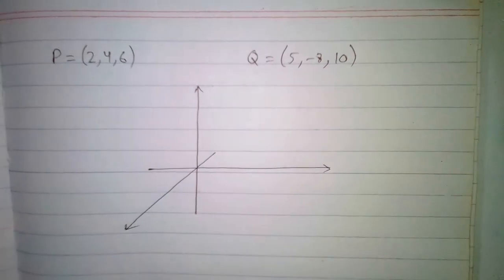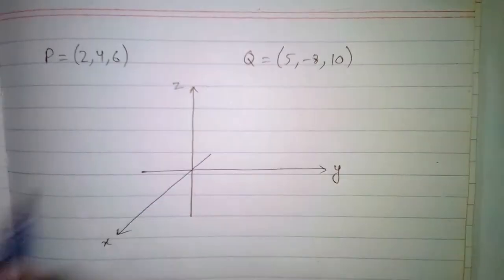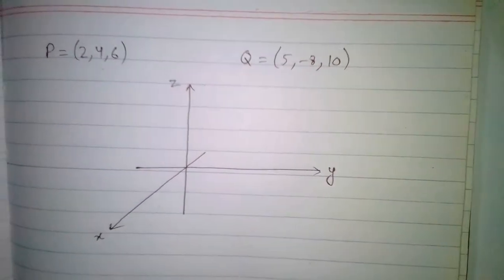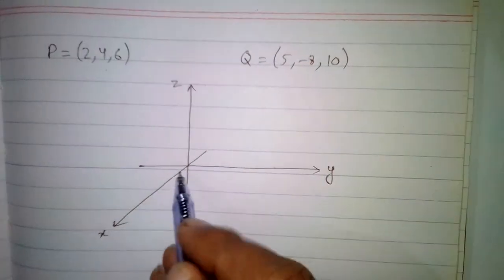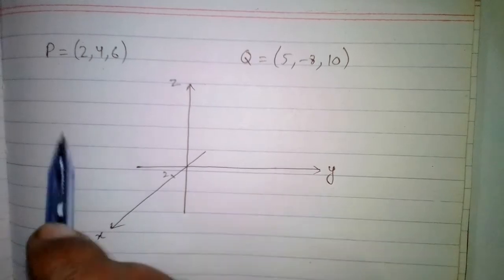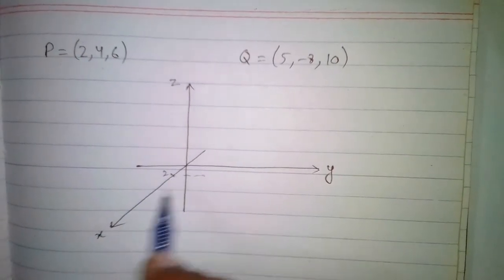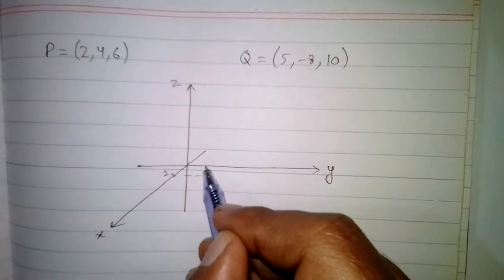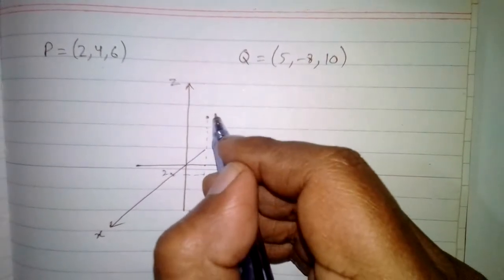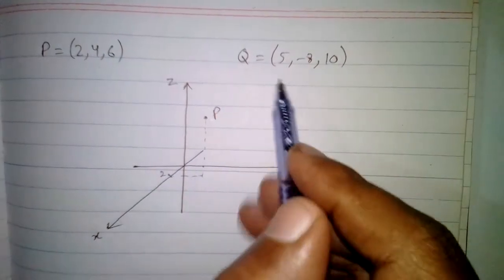Suppose this is the x-axis, this is the y-axis, and this is the z-axis. The point P has two as an x-component, so we will go two units on the x-axis, then four units parallel to the y-axis, and six units parallel to the z-axis. So this is the point P in three dimensional space.